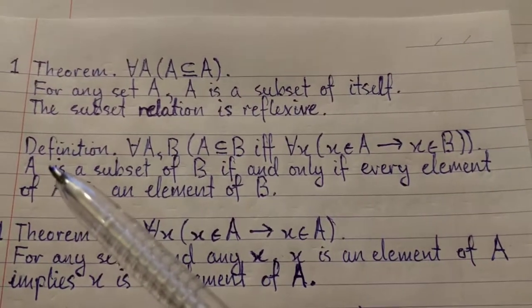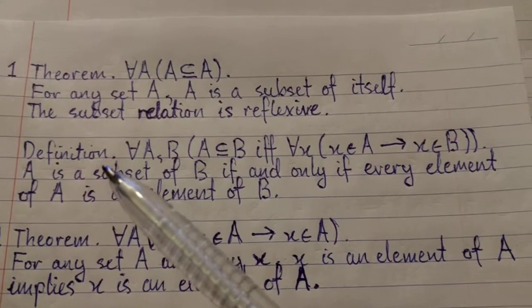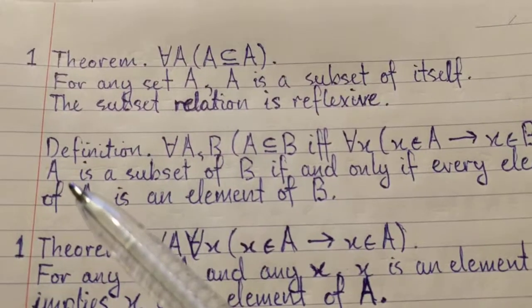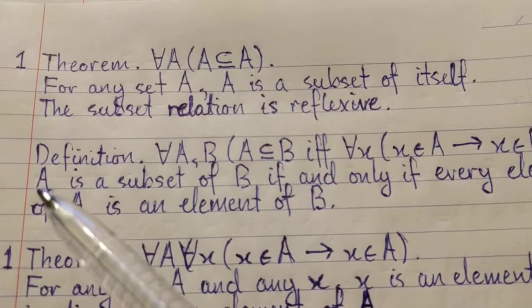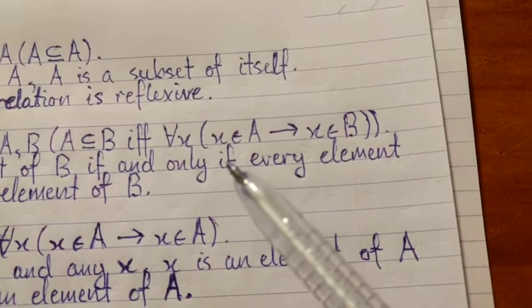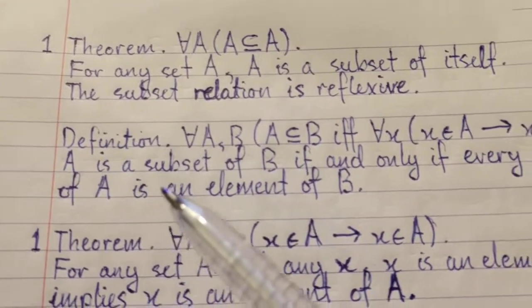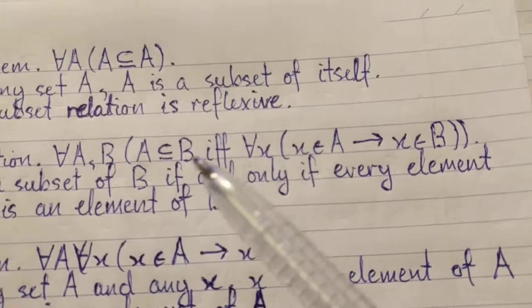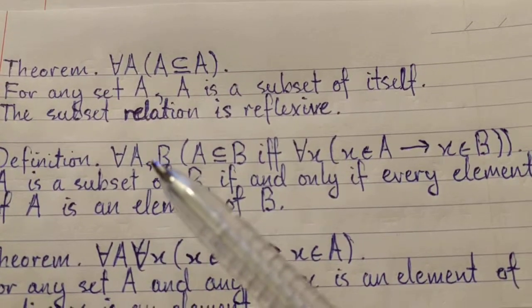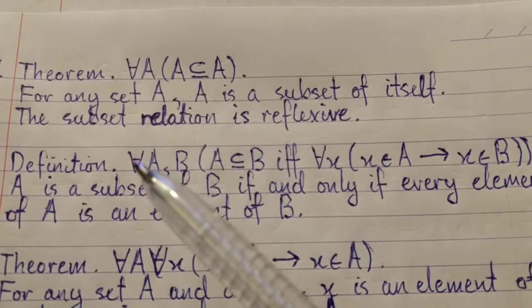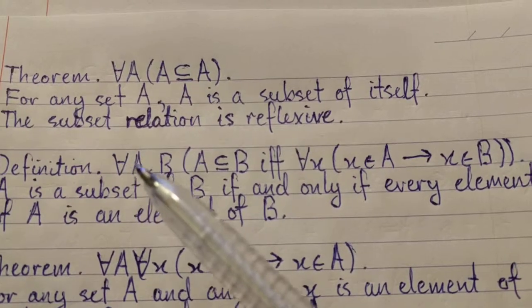Now here is the definition we're going to work with in order to do our proof. Let's start with the English definition first, and then work with the symbols. A is a subset of B, if and only if every element of A is an element of B. Now, in the symbols, we can not be so concerned with the outside quantifier, the outside universal quantifier, for all A and B.